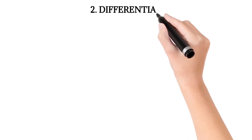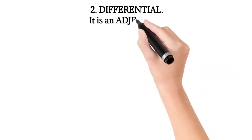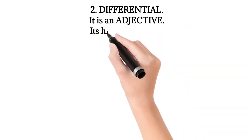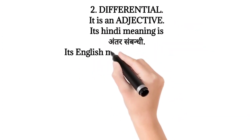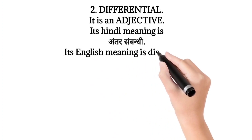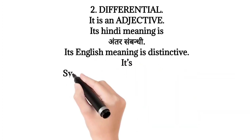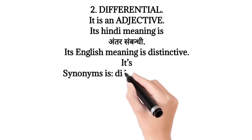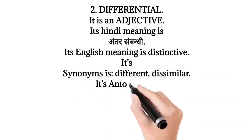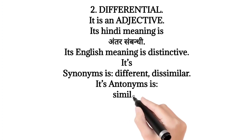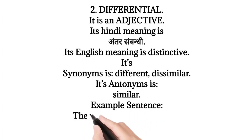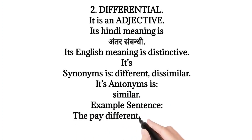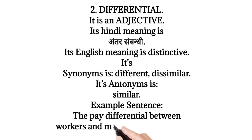2. Differential. It is an adjective. Its Hindi meaning is Antarsambandhi. Its English meaning is Distinctive. Its synonyms are Different, Dissimilar. Its antonym is Similar. Example sentence: The pay differential between workers and management is too great.